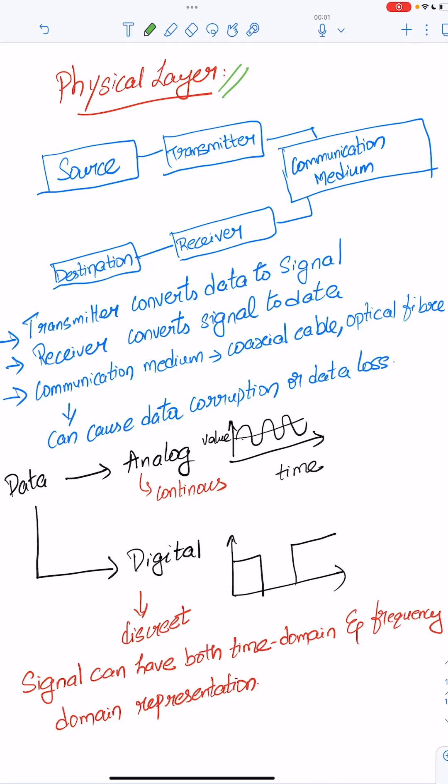In computer science physical layer, data transfers from source and transmitter to communication medium to receiver then destination. Transmitter converts data to signal, receiver converts signal to data, and communication medium is used to transfer the signal.